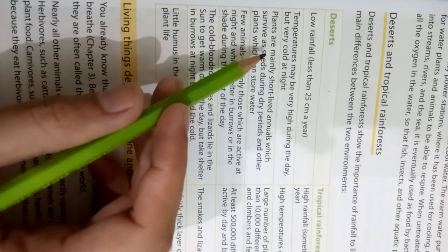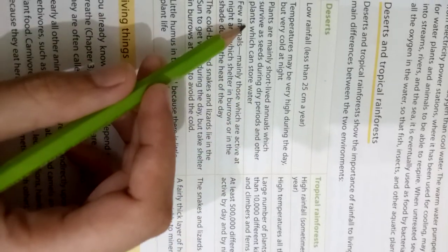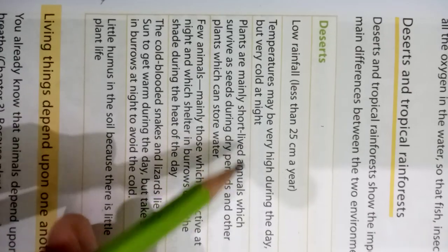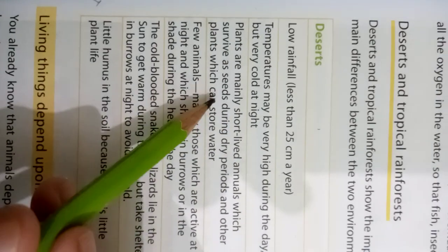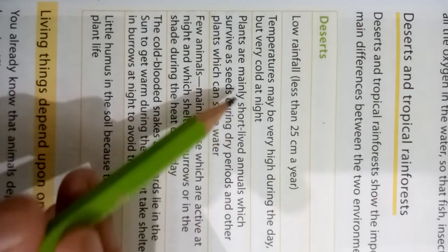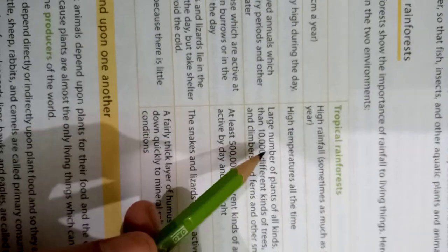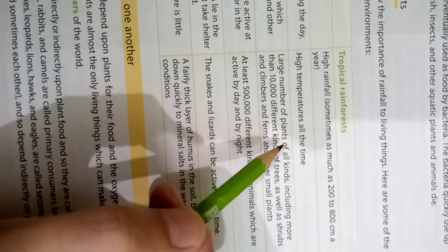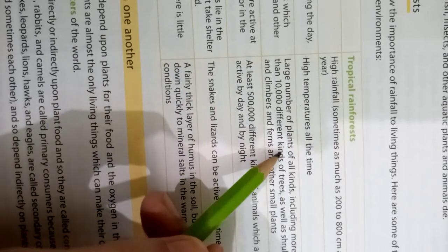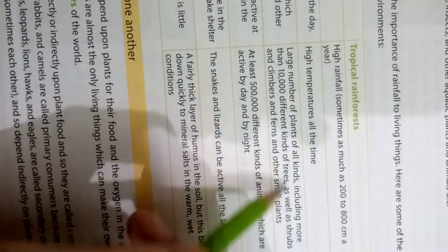In the desert, plants are mainly short-lived and survive as seeds during dry periods, or are plants which can store water. In the tropical rainforest, there are different kinds of trees, as well as shrubs, climbers, ferns, and other small plants.